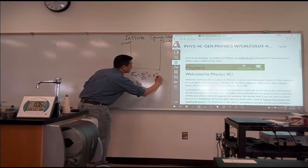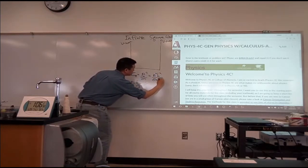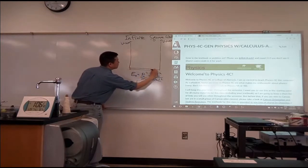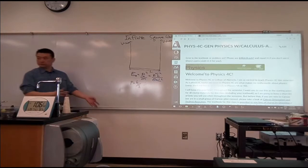The allowed energies were n squared h squared over 8mL squared, where L would be the width of the well. That's what you remember?